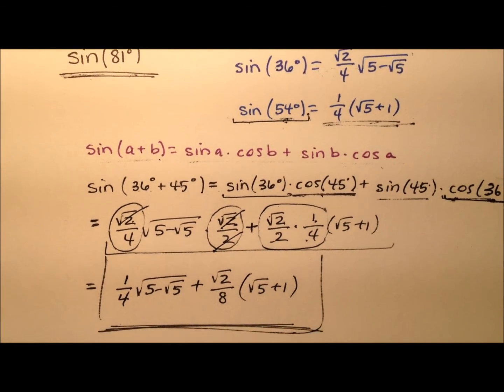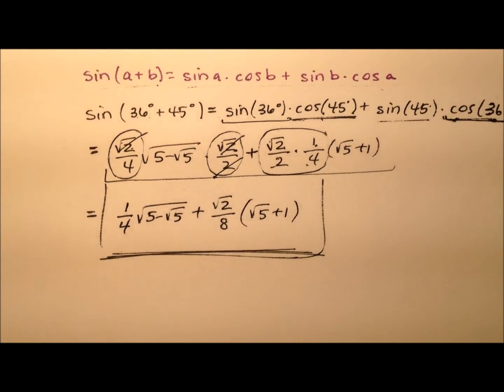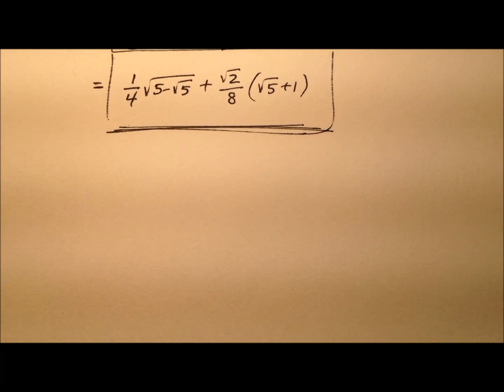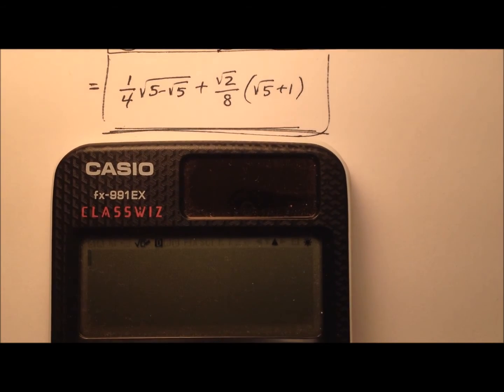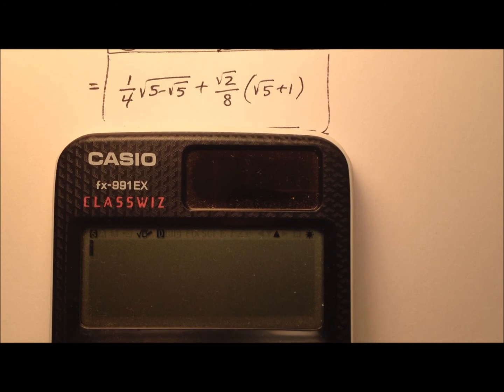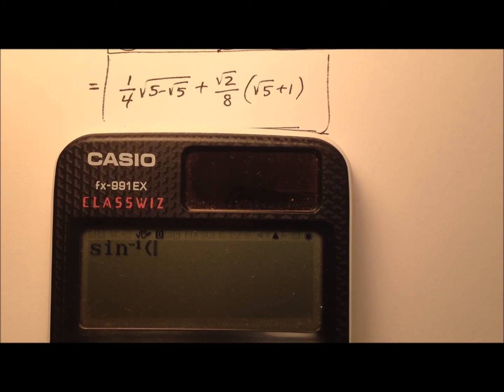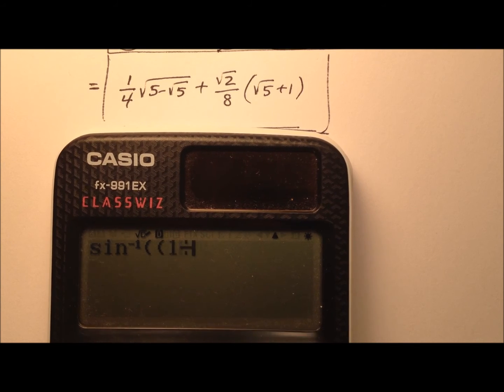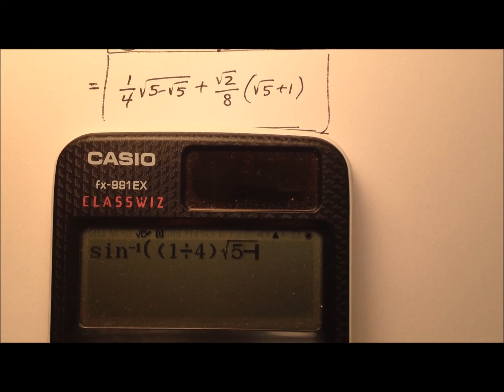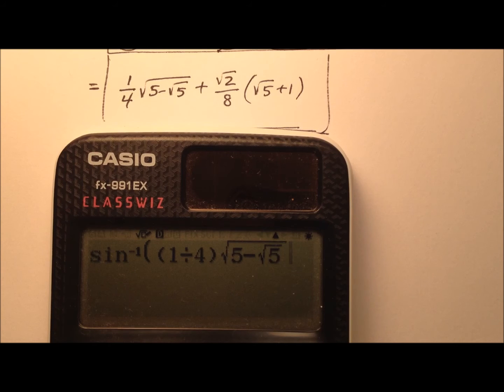Let's grab a calculator and just make sure that this works. So, here's our calculator here. Let's do the inverse sine, and we'll throw this expression in and see if it gives us our 81 degrees. So, we'll start with our 1 fourth, and we'll multiply that by 5 minus the square root of 5, and that's inside that radical.